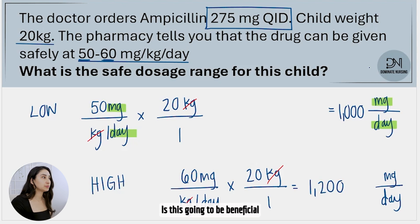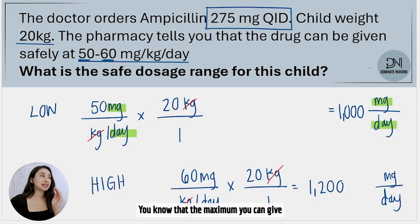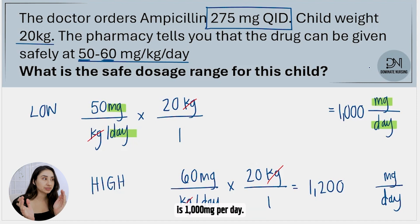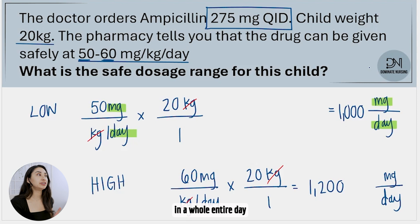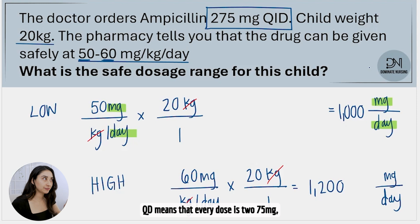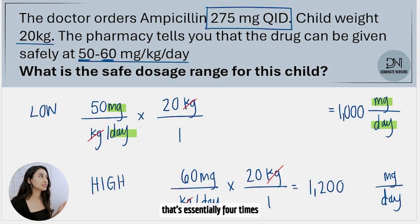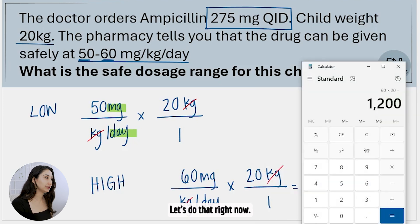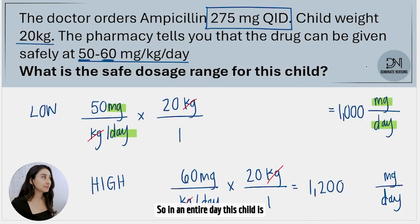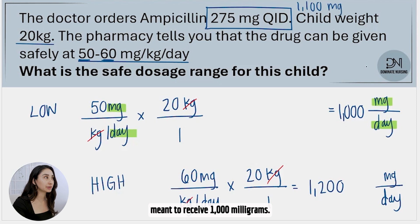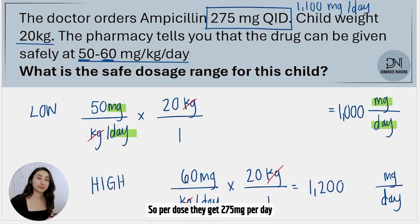Now how does this help? If they asked whether the doctor's order is safe, you know the maximum is 1200 milligrams per day and the minimum is 1000 milligrams per day. The doctor's order says 275 milligrams QID. QID does not mean you give 275 milligrams total in a day — QID means every dose is 275 milligrams and you repeat that four times throughout one day. So 275 times four is 1100, meaning in one entire day this child is meant to receive 1100 milligrams per day.